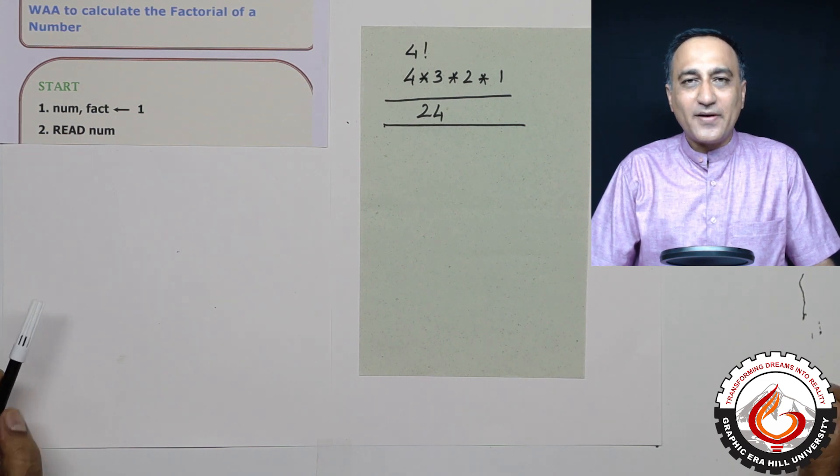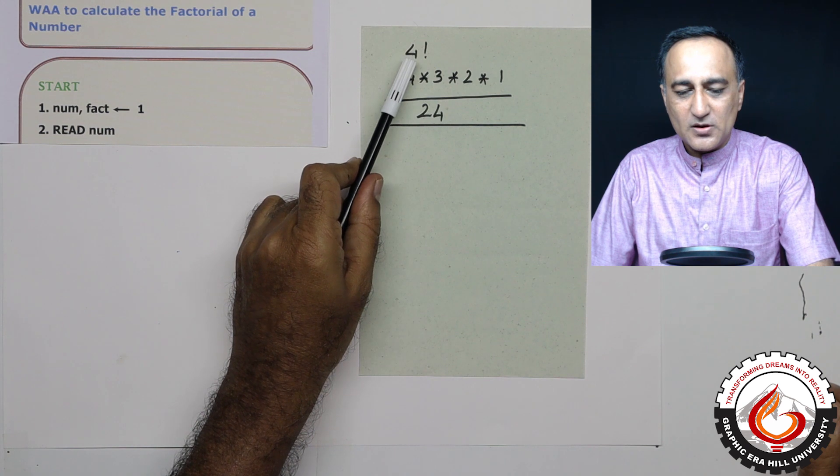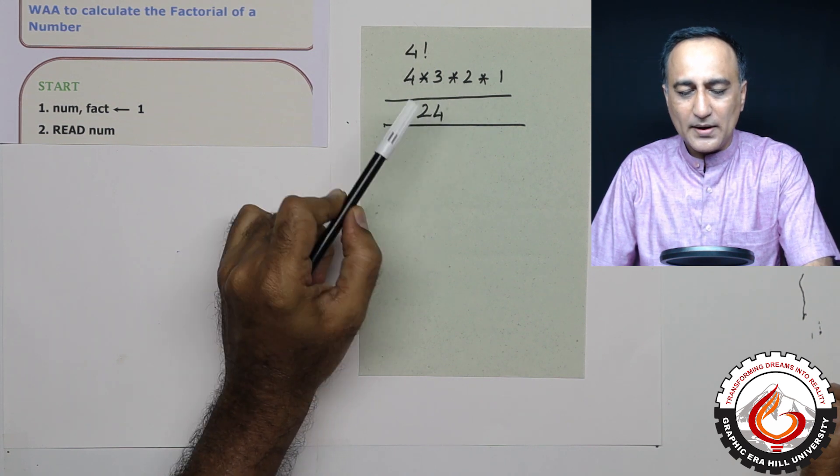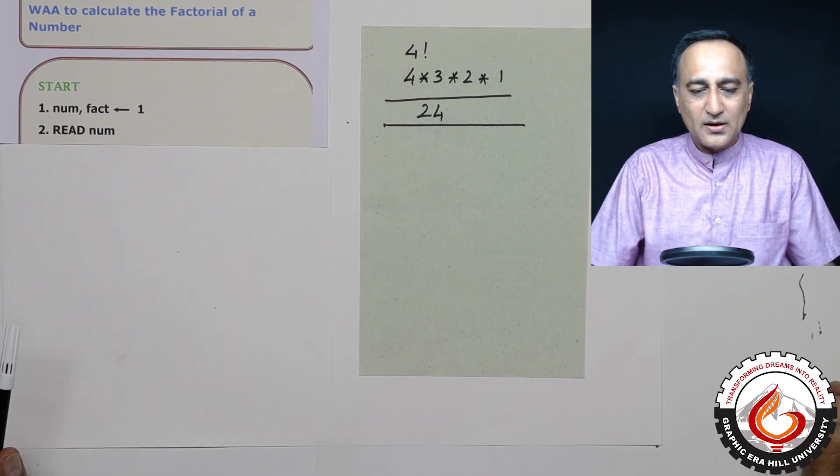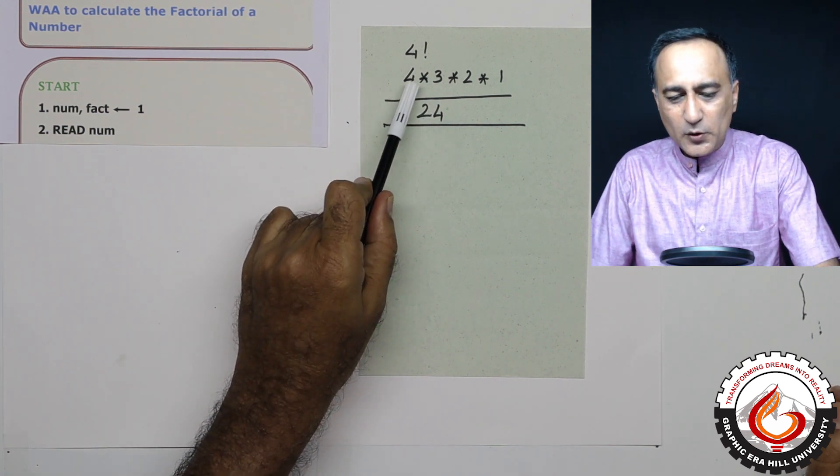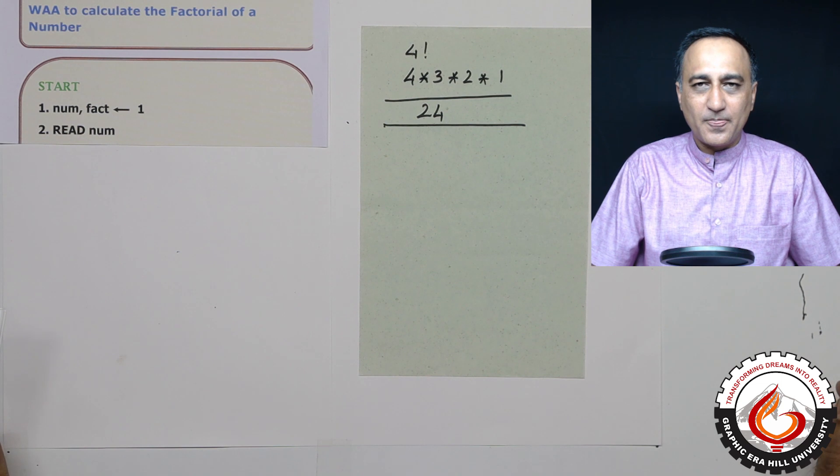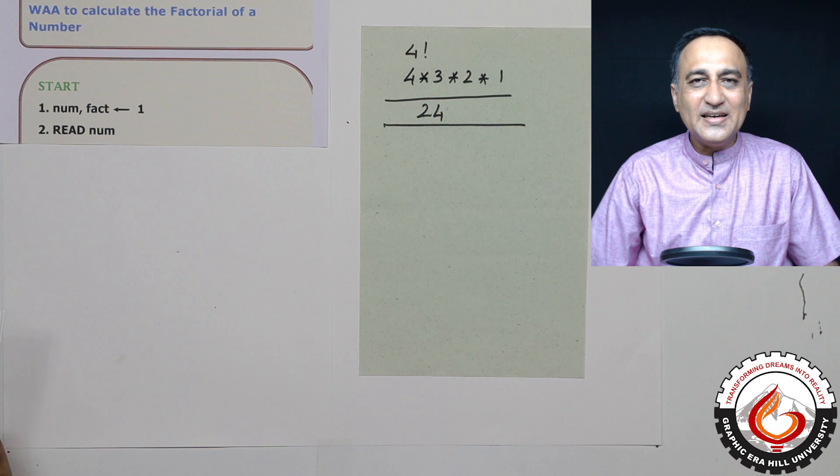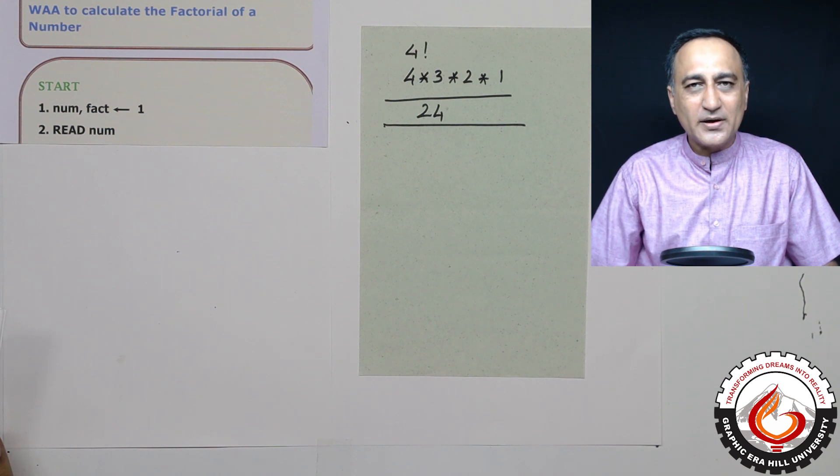So suppose I need to calculate the factorial of four. In maths, I know that it is four into three into two into one, which is 24. Manually, you can do it in one single step. But in computers, you can't do this multiplication in one single step, you need to break it down into a number of simpler steps.